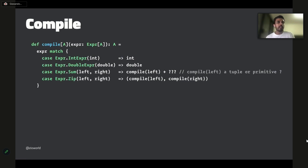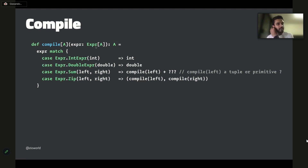We need to compile this language. Given an expression, we need to pattern match on every node in the expression tree and return the type. The compilation here is expression of A to A. If the expression is an IntExpr, A must be an integer; if it's a DoubleExpr, A is a double. But for the Sum of two expressions, you need to compile left and right — those return type A — and then you have no capability on top of A to use a plus, because it's just an A.